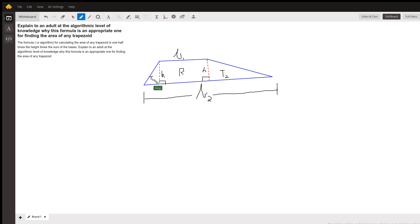Of three regions: triangle 1, triangle 2, and rectangle. So the total area of the trapezoid is going to be: